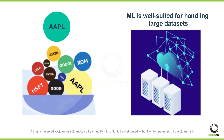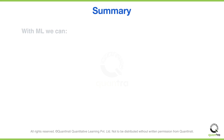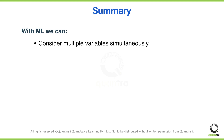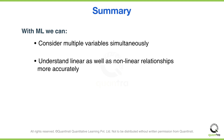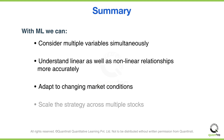That was all for this video. Let us quickly list down the reasons learned. ML can be useful for momentum trading because we can consider multiple variables simultaneously, understand linear as well as non-linear relationships more accurately, adapt to changing market conditions, and scale the strategy across multiple stocks.